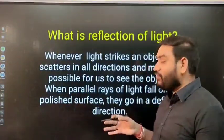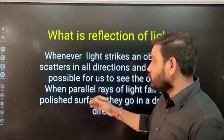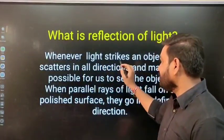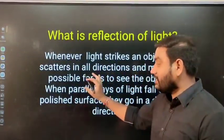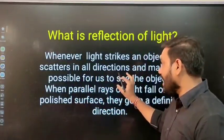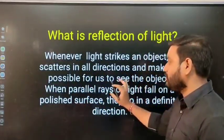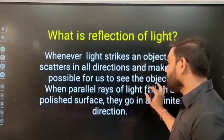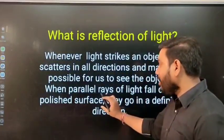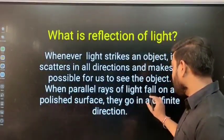So whenever light strikes an object, it scatters in all directions and makes it possible for us to see the object. When parallel rays of light fall on a polished surface, they go in a defined direction.